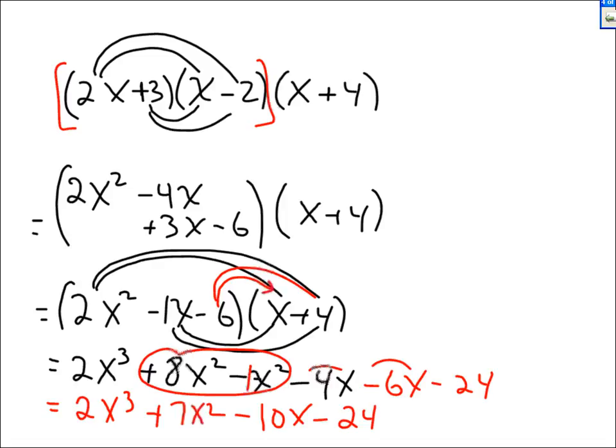This is how you multiply more than two factors. Factors are things being multiplied. When asked to multiply three of them, multiply two first, then multiply that answer by the third. That finishes the section on multiplication of polynomials. Good luck with it.